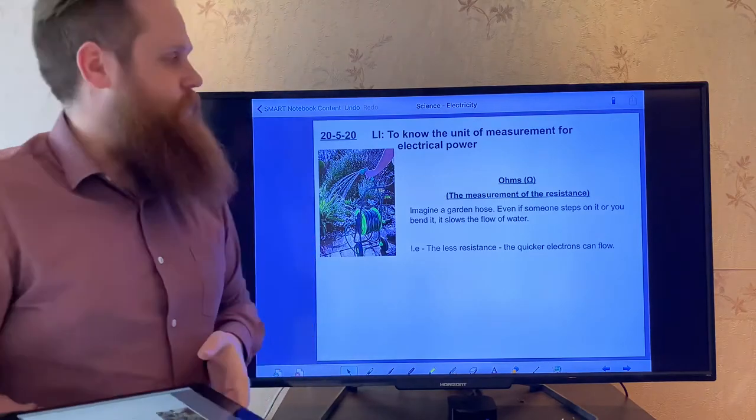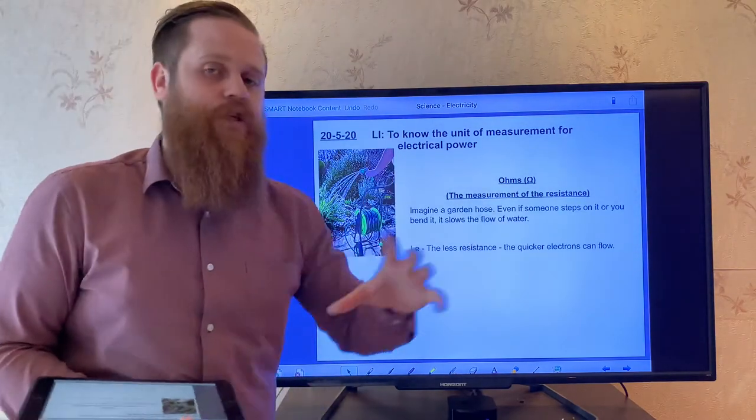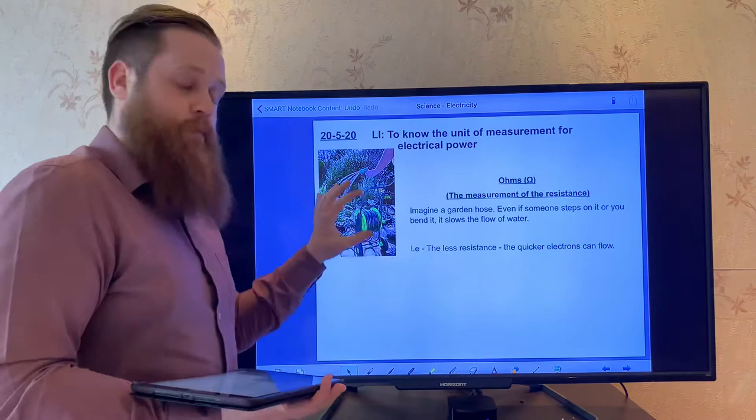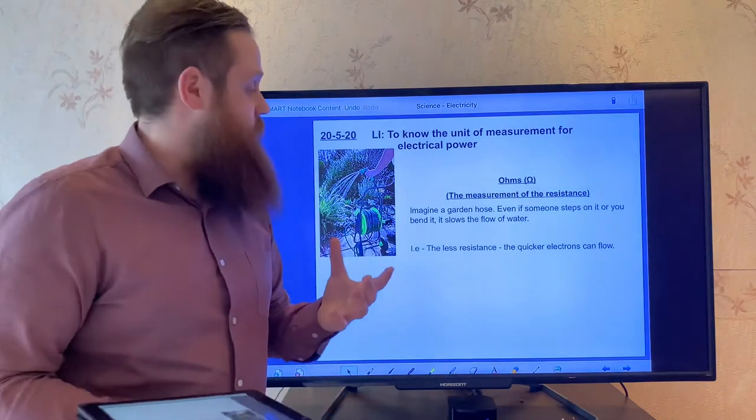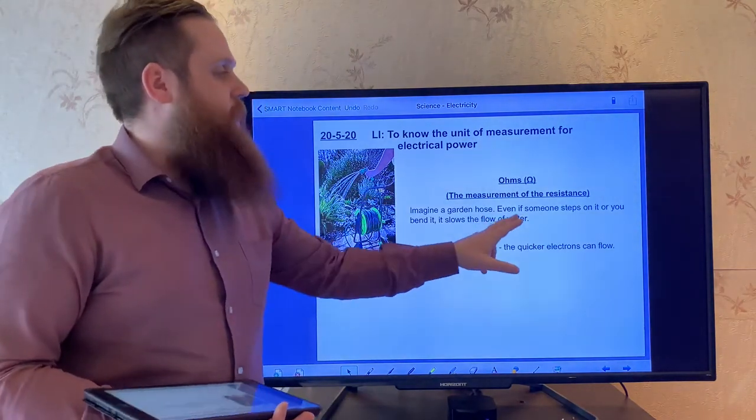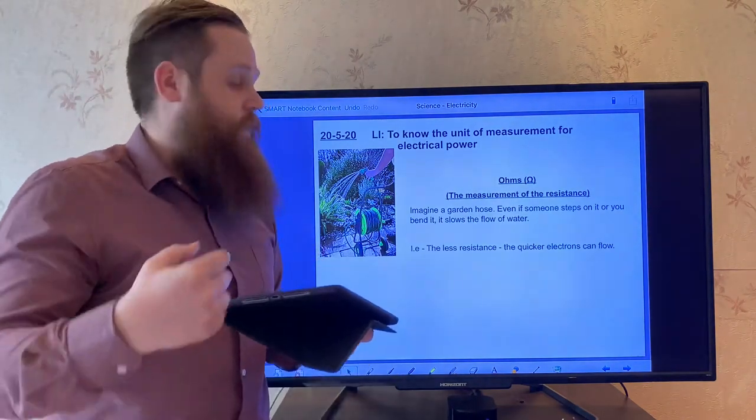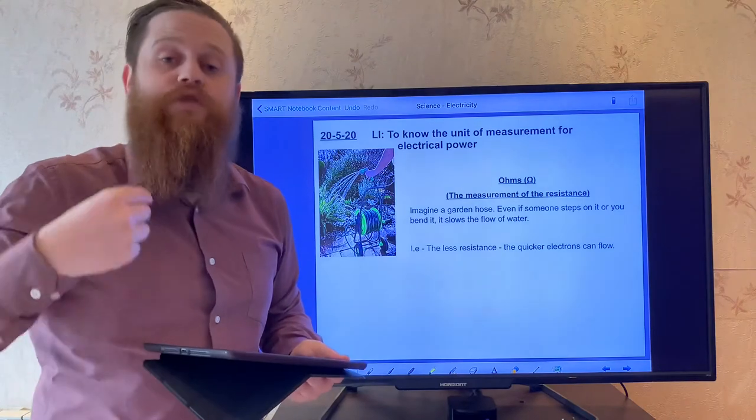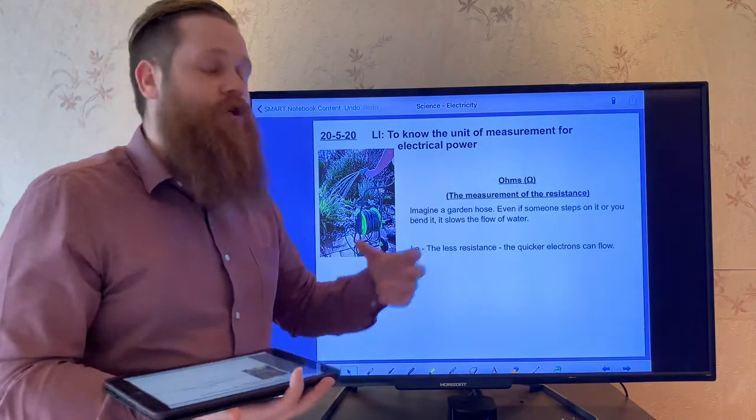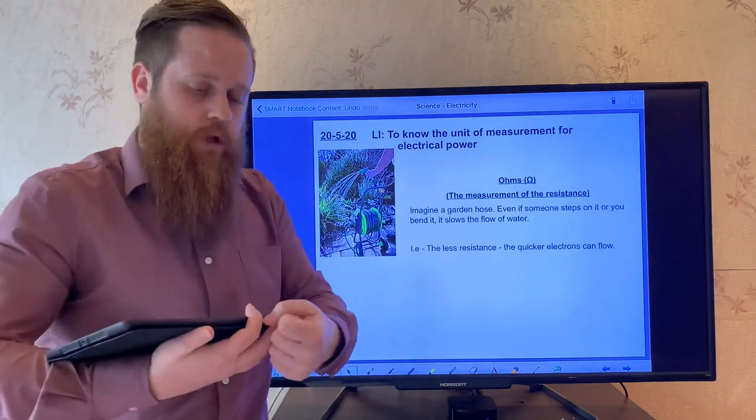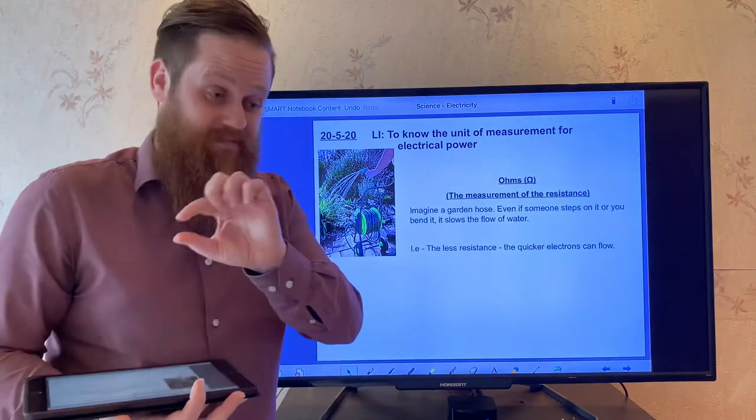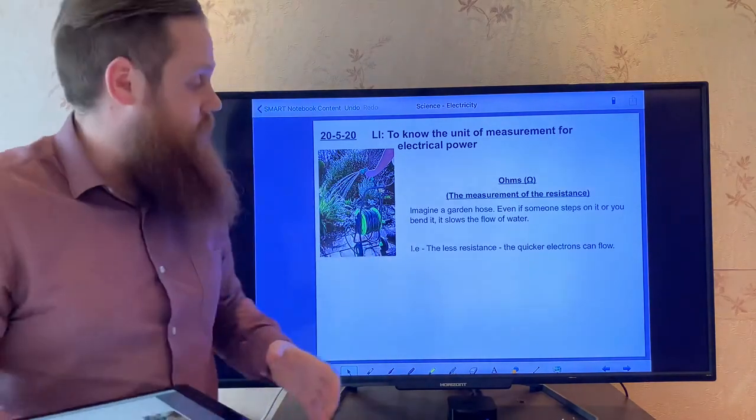We've also got ohms. Now ohms measure the resistance. Again, putting it into a garden hose context. Imagine it this way. Even if someone steps on your hose or if you bend your hose, then it's restricted. It's got a resistance. And that will slow the flow of water. If you bend the hose, less water will be able to go out because it's got a sort of a bottleneck. It's got to get through there.